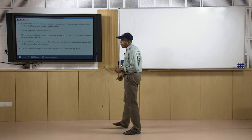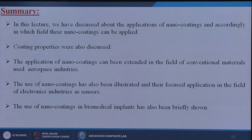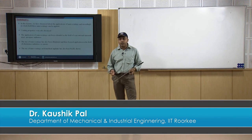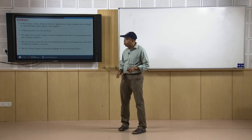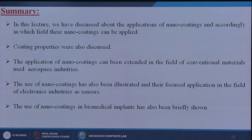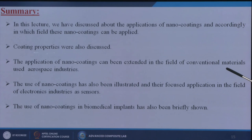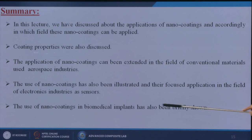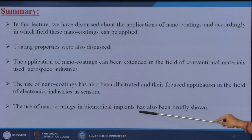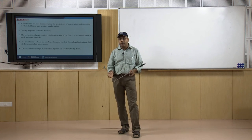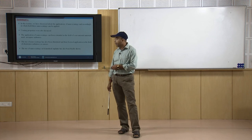In summary, this lecture discussed several types of applications of nano composites, though there are many more due to time constraints. We discussed the applications of nano coatings and the fields in which they can be applied, coating properties, applications in conventional materials used in aerospace industries, use of nano coatings as sensors in the electronics industry, and nano coatings for biomedical implants. These technologies represent just a few of the many applications of nano composite coatings.